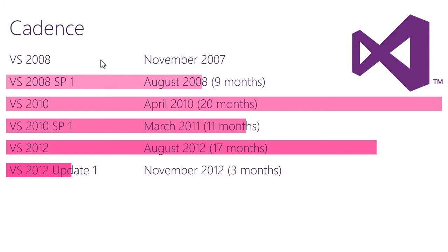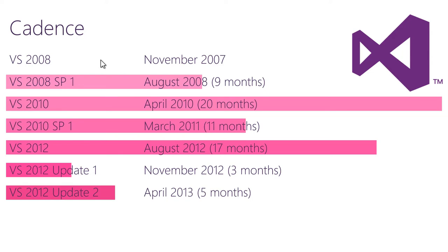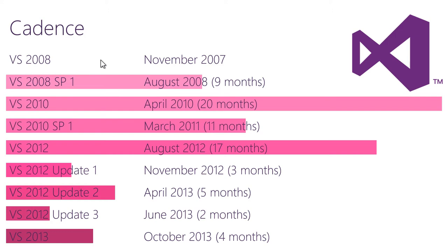With Visual Studio 2012 this changed. Update 1 came out just three months after the original release, and not only did it contain bug fixes, it also included new functionality. Five months after that, Update 2 — which contained even more functionality, including a whole new version of Light Switch. Update 3 came just two months after that with more new features. And then just four months after that we got Visual Studio 2013 — just over a year for a whole new release, a major improvement.